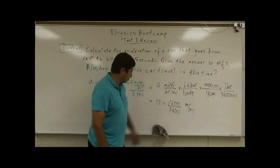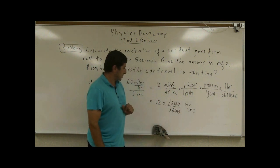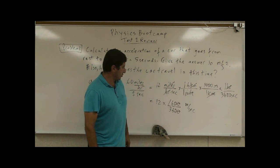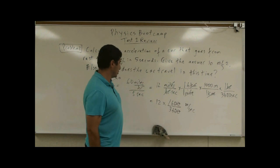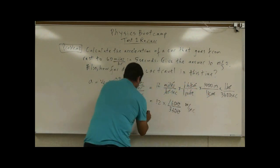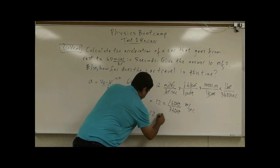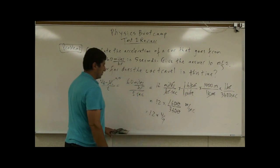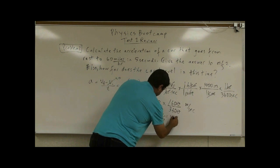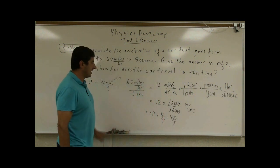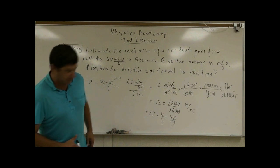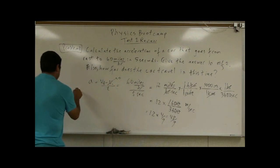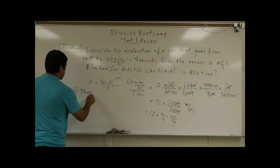Well, what's the ratio of 1,600 to 3,600? The zeros cancel. 4 goes into 16, 4 times. 4 goes into 36, 9 times. So we can just multiply it by 4/9. So 12 multiplied by 4/9 is 48 divided by 9, which is 5.33. So the acceleration is going to be 5.33 meters per second squared.